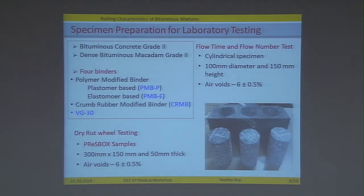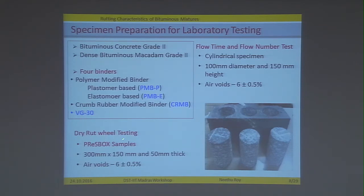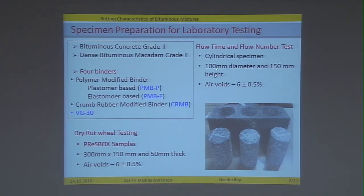For sample preparation, we used two bituminous mixtures — bituminous concrete grade 2 and dense bituminous macadam grade 2 — with four binders: PMBP (plastomer-based), PMBE (elastomer-based polymer), CRMB, and VG30. For the rut wheel testing, press box samples were cut to 300 × 150 × 50 mm slabs, cast at an air void of 6 ± 0.5 percent. For experimental investigations, flow number and flow time tests used cylindrical specimens of 100 mm diameter and 150 mm height with an air void of 6 ± 0.5 percent.